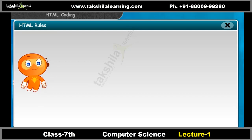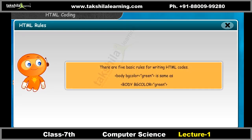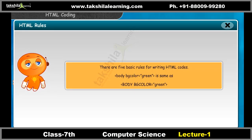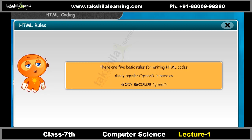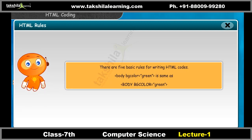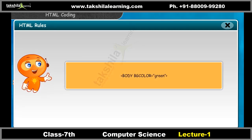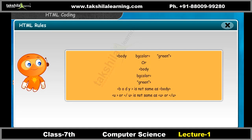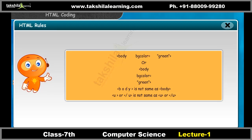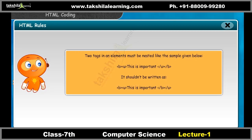There are five basic rules for writing HTML codes. Though tag and attribute names are not case sensitive, it is better to use lowercase — it could be made mandatory in future HTML. Attribute values can be case sensitive. Spaces between tags do not matter. There should be no space inside a tag. Two tags in an element must be nested, like the sample given.